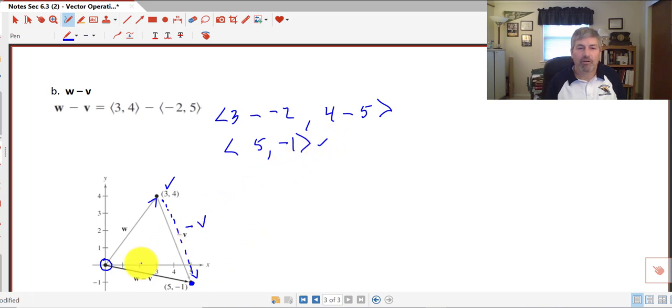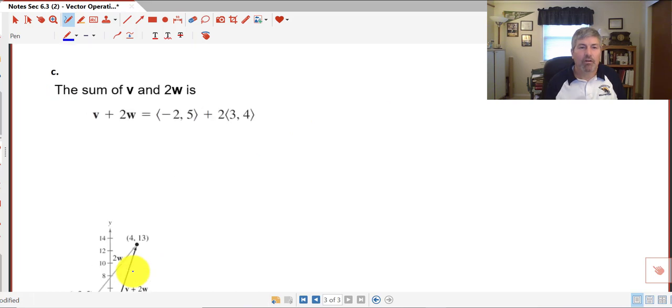In our third sample, we want to find the sum of v and 2w. So our component vector v had a first coordinate of negative 2 and a second coordinate of 5. And then 2w, well, we need to scale that. So we'll just copy this one down, our v, and then plus our new component vector of 6, 8. And then adding those together, we get our new component vector of 4, 13.